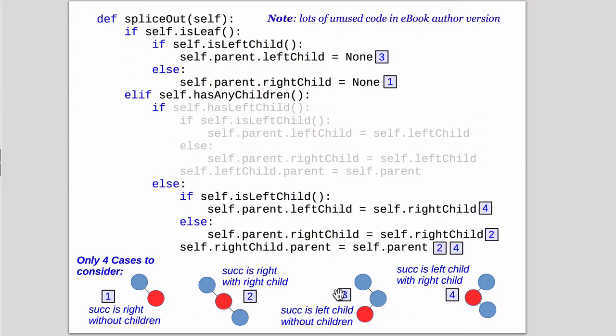Okay the third case is the successor is a left child. So somewhere this is perhaps the one we're deleting and the right hand side is not it.